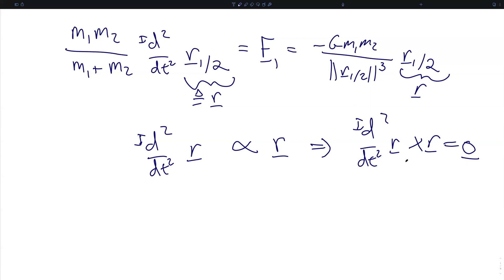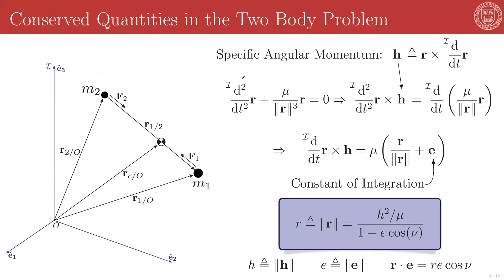Before we can get to that derivation, we have to introduce a new quantity: the specific angular momentum. In all of astrodynamics, 'specific' means divided by the mass. And so this angular momentum is defined very much like the inertial angular momentum that we have defined previously, except that it is scaled by the mass of whichever particle we happen to be talking about. We will denote the specific angular momentum by boldface h, and it is defined as the position vector r crossed with the velocity vector, or the inertial derivative of r.